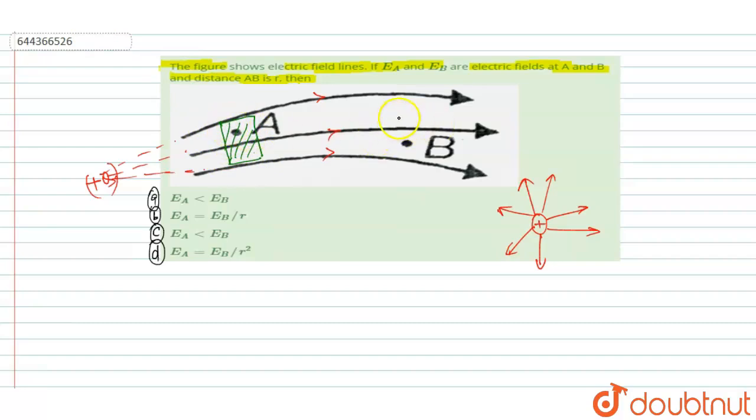But the same area is taken here. Then only one electric field line goes through this area. So we can say, strength of the electric field at point A is greater than strength of the electric field at point B.